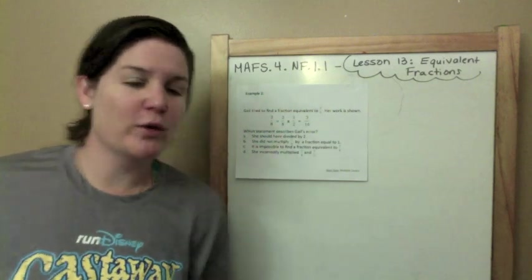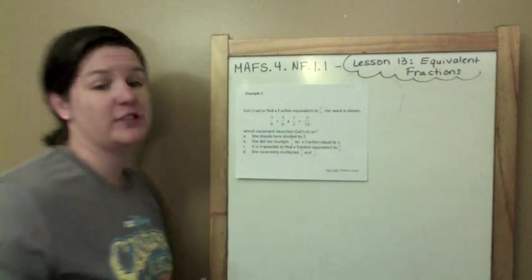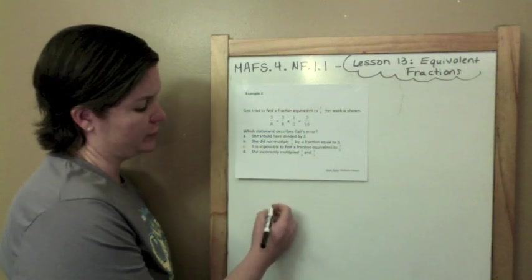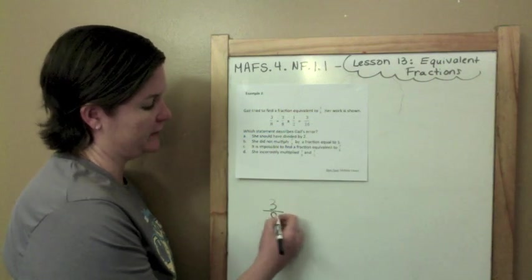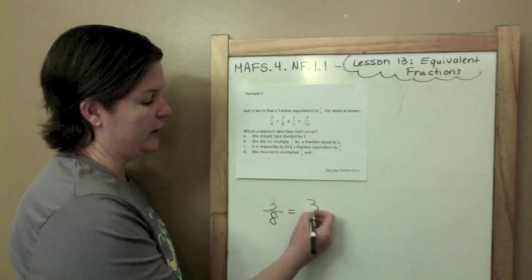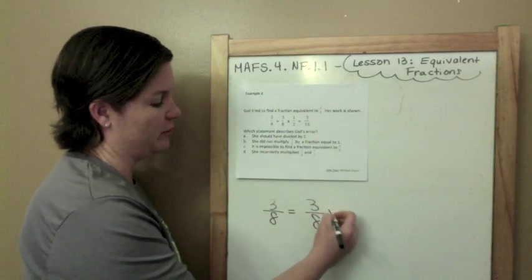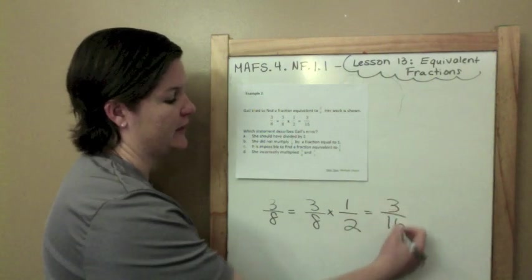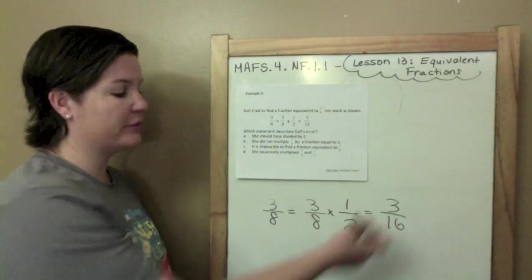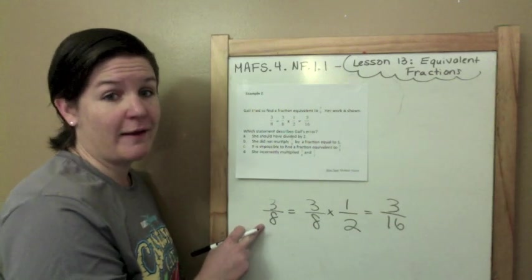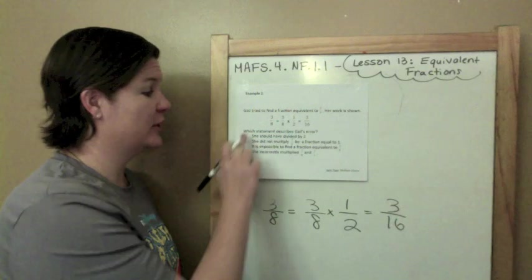That would be 2 times 3 is 6, 3 times 3 is 9. So 6 ninths would also be an answer. I'm only putting 1 though into my box. Notice my work was away from the box. Gail tried to find an equivalent, a fraction equivalent to 3 eighths. Her work is shown. So she wrote that 3 eighths equals, I'm just taking this and I'm making it bigger for you, equals 3 eighths.